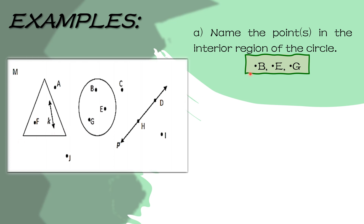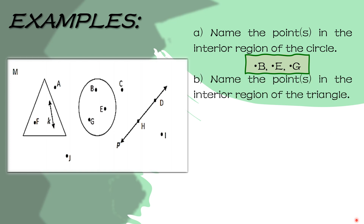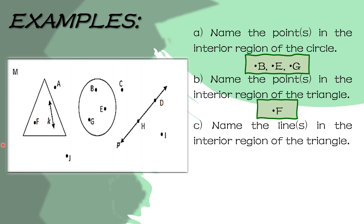Kapag papangalanan natin ang point, kailangan po meron tayong dot and then the capital letter, or pwede naman sa halip na dot, pwede nyo isulat yung buong word na point. Next question — name the point or points in the interior region of the triangle. Sa loob ng triangle meron tayong point F at line K. Pero kailangan pangalanan ang point, so the answer is point F, dahil ang K ay hindi point kundi example ng line. Third, name the line or lines in the interior region of the triangle — nag-iisa lang ang line dyan and that is line K.